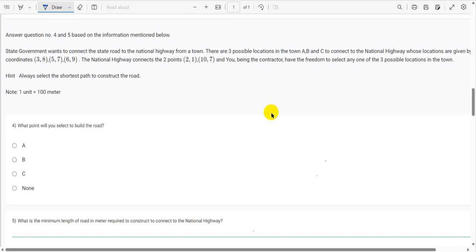State government wants to connect the state road to the national highway from a town. There are three possible locations in the town A, B, C to connect the national highway whose locations are given by the coordinates. The national highway connects two points and you being the contractor have the freedom to select any one of the three possible locations in the town. And one hint is given: always select the shortest path to construct the road.